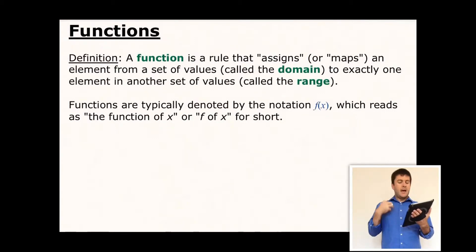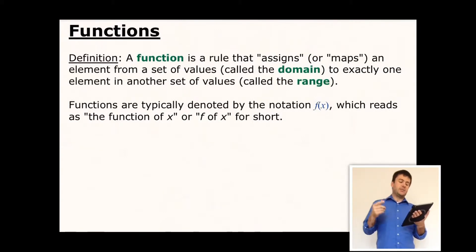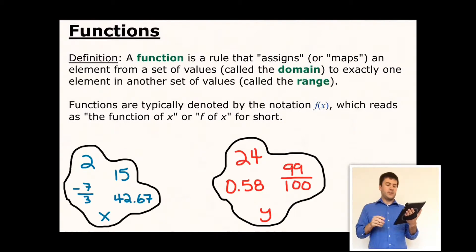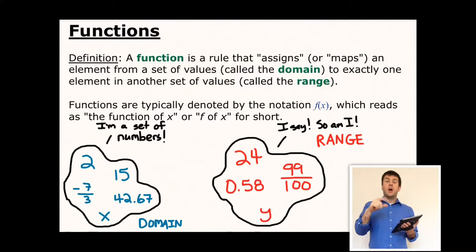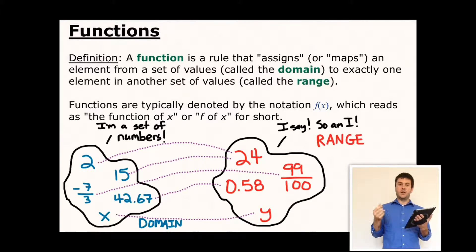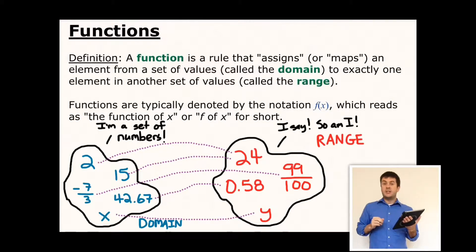Let's look at a more formal definition. A function is a rule that assigns or maps an element from a set of values — which we'll call the domain — to exactly one element in another set of values called the range. So if I have a blue set and a red set, a function maps a value from the domain to exactly one value in the range. That's a very important thing to remember. More than one domain value can go to the same range value, but the reverse is not true.